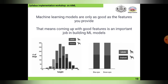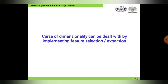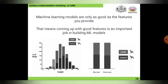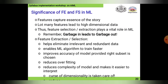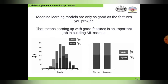The curse of dimensionality can be dealt with by implementing feature selection or feature extraction, which will be covered in the next topics. The machine learning model performs better when good features are provided.